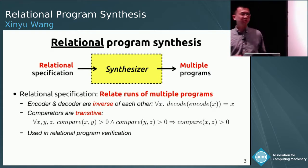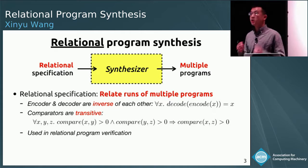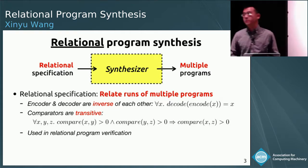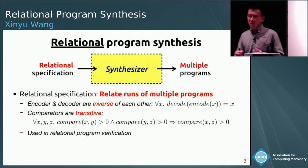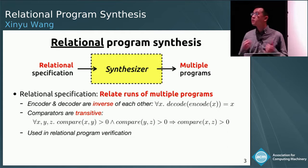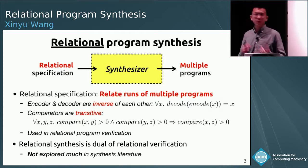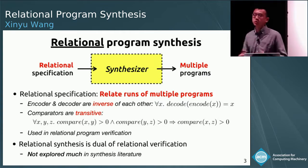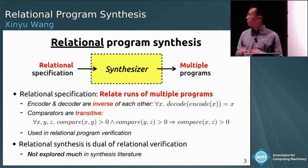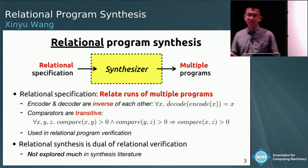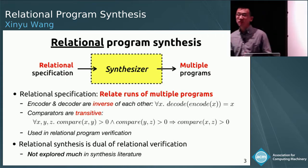In fact, this notion of relational specification is not at all a new concept to the verification community, given that there has been lots of work in the space of relational program verification, where the goal is to verify a program satisfies a given relational specification. However, it turns out that the problem of relational synthesis, which is the dual of relational verification, has not quite been very well explored in the synthesis literature. In this work, we take the first step towards formalizing and solving this kind of problem.